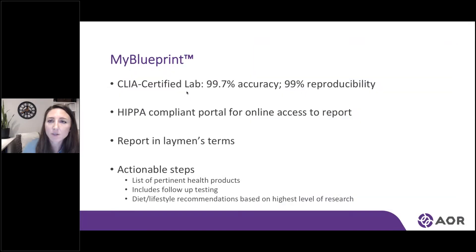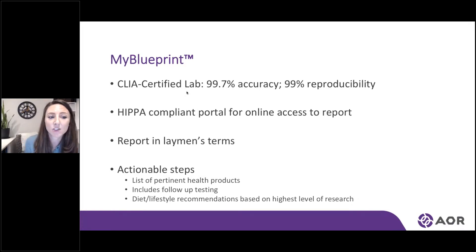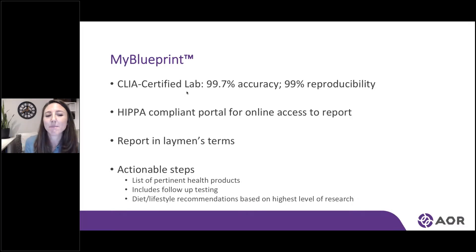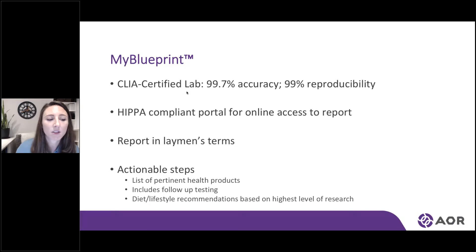It's important that any genetic tests are extremely accurate in what they're reporting. AOR is using a diagnostic lab with what's called the CLIA certification, where there is 99.7% accuracy and 99.999% reproducibility, meaning the results being reported are accurate. The information is delivered through an online portal which is compliant with Health Canada's Privacy Protection Act, so it's HIPAA compliant.